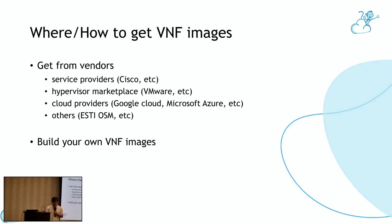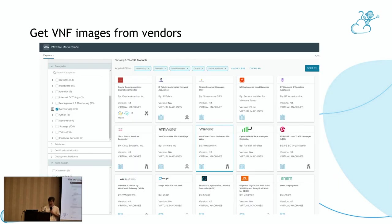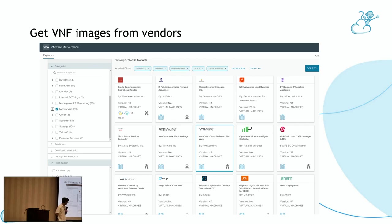We can get VNF images from different sources. For example, from service providers like Cisco or other hardware providers, from hypervisor marketplaces, and from cloud providers. There are also some public images from organizations such as ETSI OSM. Of course, we can also build our own VNF images. These images from Cisco provide virtual routers, and the VMware marketplace and other cloud provider marketplaces also offer a lot of options for different network functions.